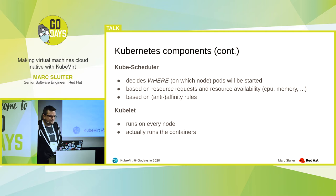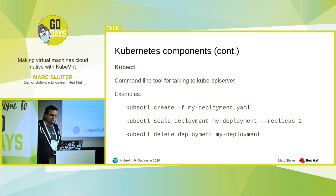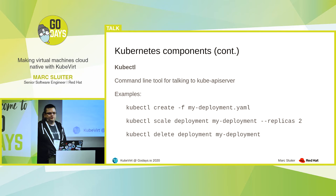Then you have the kubelet. That is a component which is running on every host, and it basically talks to the container runtime — for example, Docker — for actually starting the containers. Then we have a command line tool called kubectl. Others name it kubectl or whatever — there is an ongoing discussion in the community. This makes it easier to talk to the Kube API server, so you don't have to do everything with curl. You can use it for scaling deployments, creating, and deleting deployments.